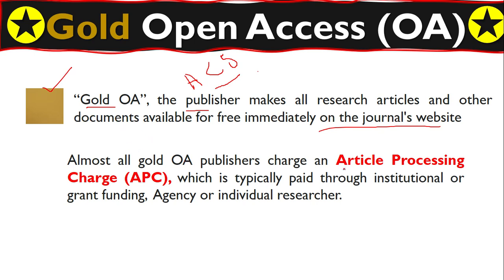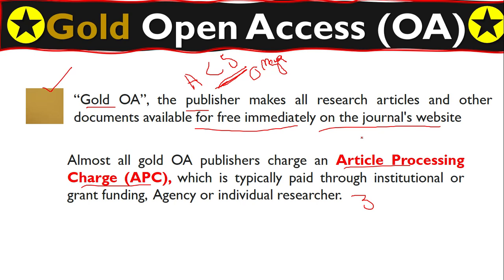It will be free because you paid — that is called the article processing charge. For example, if I submit my article to ACS Omega, which is an open access journal, when it is accepted they will ask me for money — perhaps three thousand dollars or two hundred dollars, whatever the price is. That fee is called the article processing charge. When I pay that amount, my article will be immediately available on the journal website and everybody can read and download it.